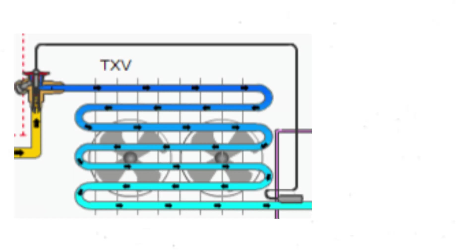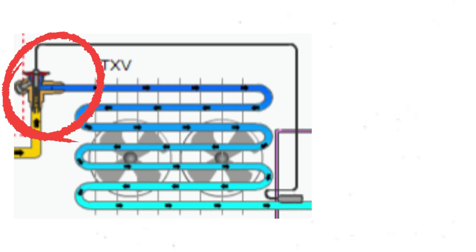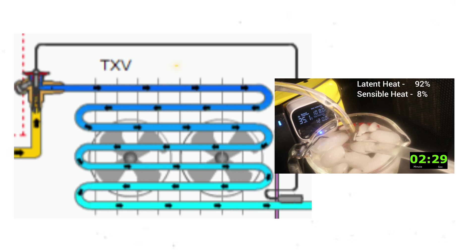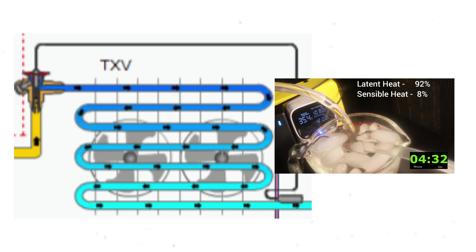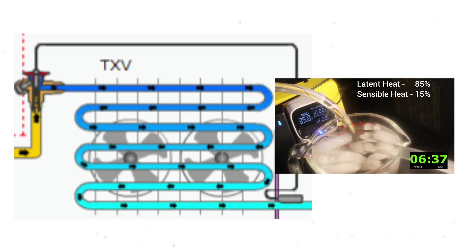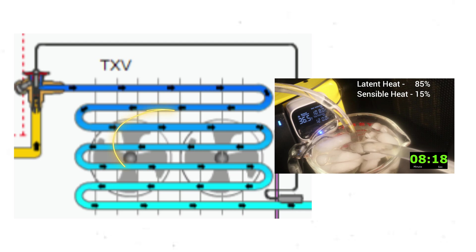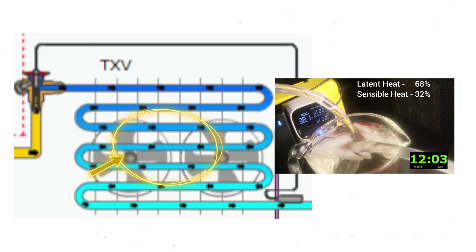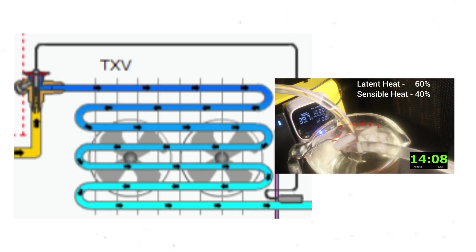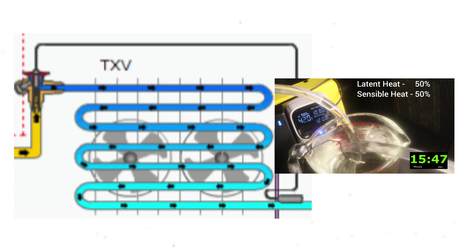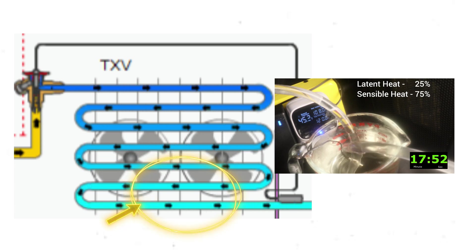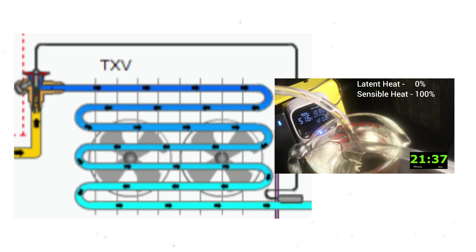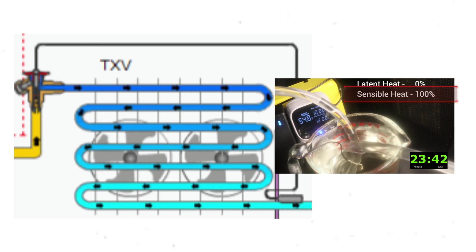This is the exact same process occurring in an evaporator coil in an air conditioning system. When a metering device injects liquid refrigerant into the evaporator coil, that liquid absorbs heat from the home flowing over the coil to change state from a liquid to a vapor — just like ice in our glass. As the refrigerant travels through the coil, more of it transitions to a vapor, and more sensible heat becomes available to change the refrigerant's temperature. By the time the refrigerant reaches the other side of the coil, it is completely a vapor, and all the heat from the home can now go into changing the temperature of the refrigerant itself.